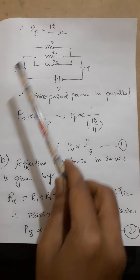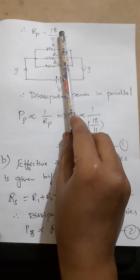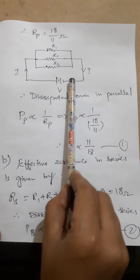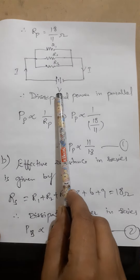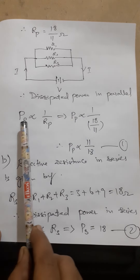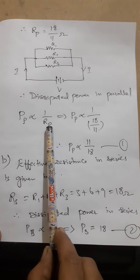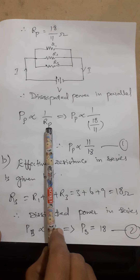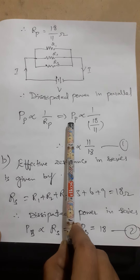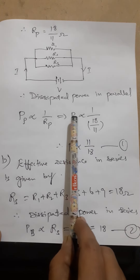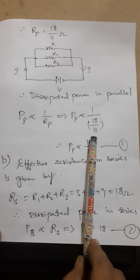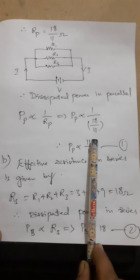So 1/Rp = 11/18, which gives Rp = 18/11 ohms. The diagram for the parallel connection shows R1, R2, R3 connected to the voltage source. The formula for dissipated power in parallel is that power is proportional to the reciprocal of the effective resistance. So Pp is proportional to 1/Rp = 11/18. Let us call this equation number one.